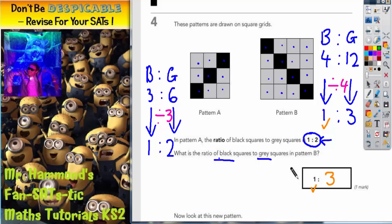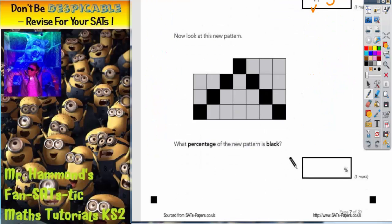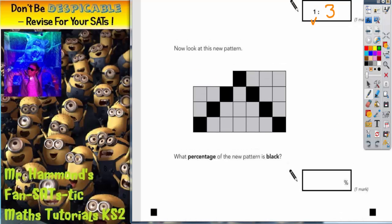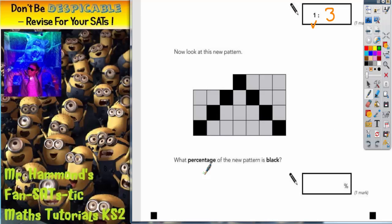Scrolling down, let's have a look at the second part of the question. It says, now look at this pattern. What percentage of the new pattern is black? Well, the first thing we need to do is figure out how many black squares we have got. We've got 1, 2, 3, 4, 5, 6, 7 black squares.